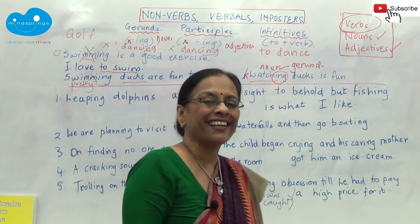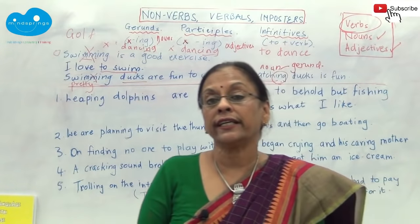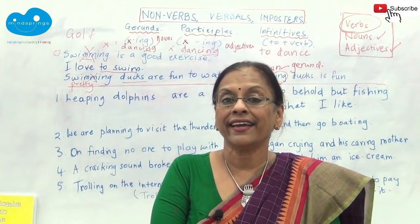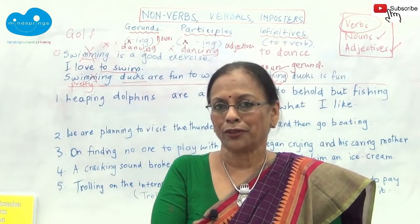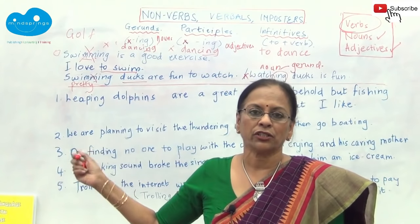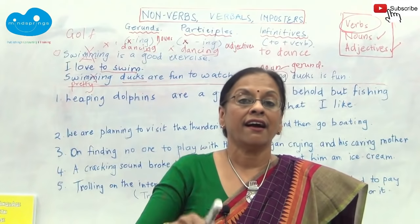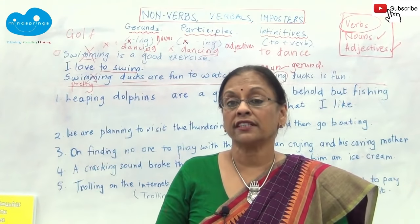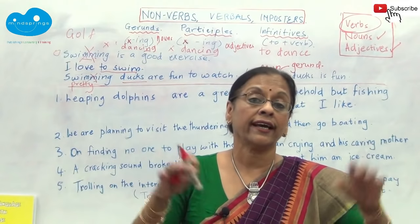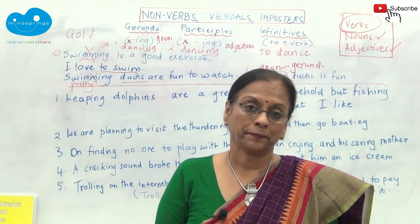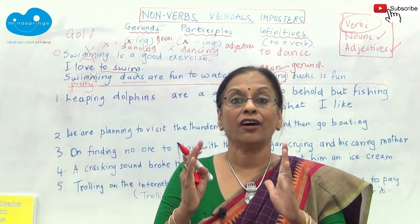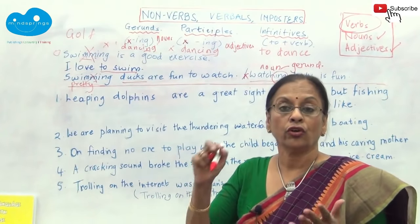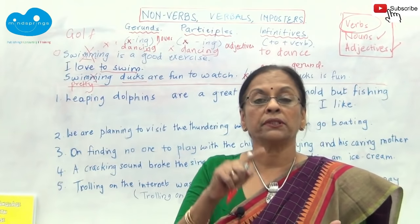So a gerund is nothing but a special name given to nouns ending in -ing. That's all. And participles are special names given to adjectives ending in -ing. What you need to remember is that both these -ing words should not have any helpers — they should be standing alone. Once you understand that, you've understood your gerunds, participles, and infinitives.